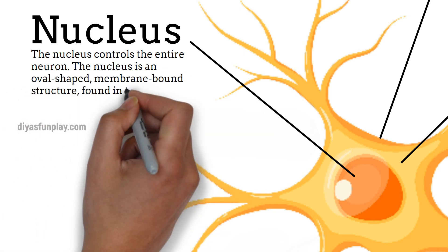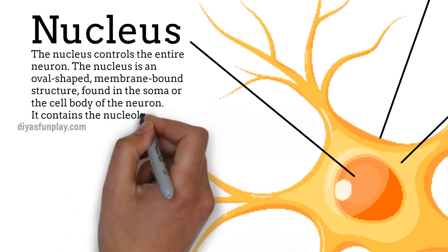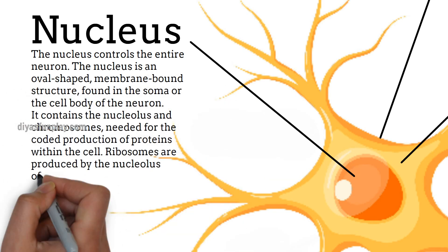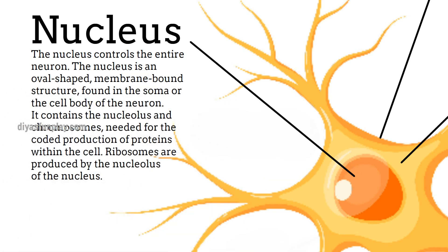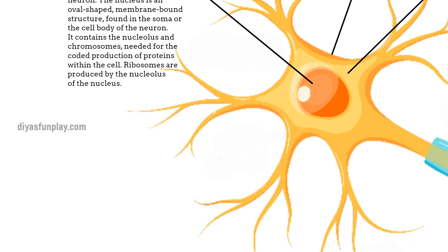Nucleus. The nucleus controls the entire neuron. The nucleus is an oval-shaped, membrane-bound structure found in the soma or the cell body of the neuron. It contains the nucleolus and chromosomes, needed for the coded production of proteins within the cell. Ribosomes are produced by the nucleolus of the nucleus.